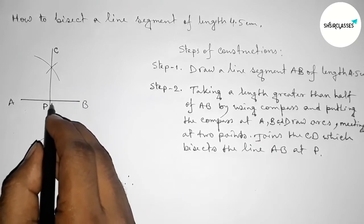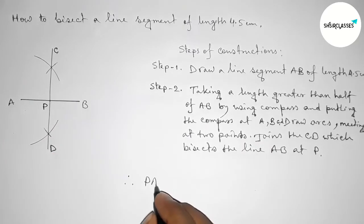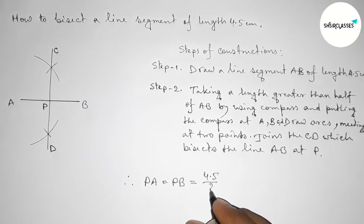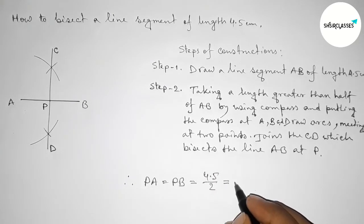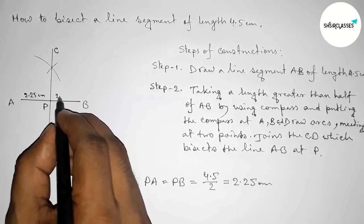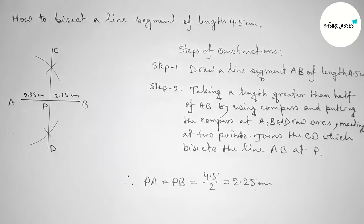Therefore PA equals PB. So PA equals PB equals 4.5 by 2. Now dividing by 2, this is 2.25 centimeters. So this is 2.25 and this is 2.25 centimeters.